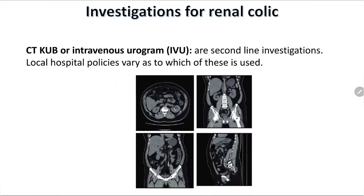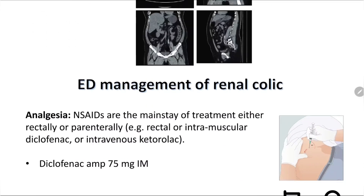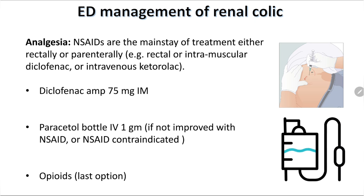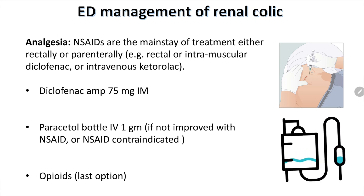CT scan and sometimes IV urogram are very helpful; they are the second-line investigations, but local hospital policies vary as to which is used in the acute setting. In our emergency department, we usually don't use CT scan to diagnose renal colic. What is the emergency department management of renal colic?